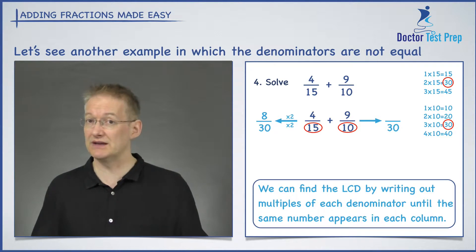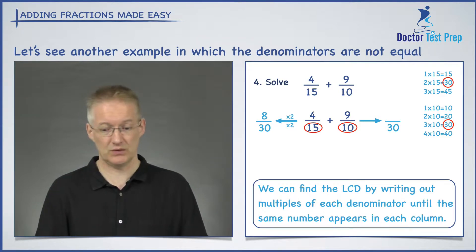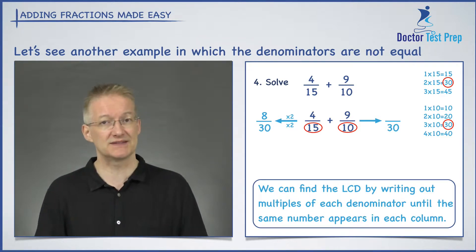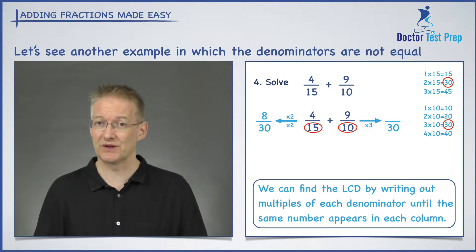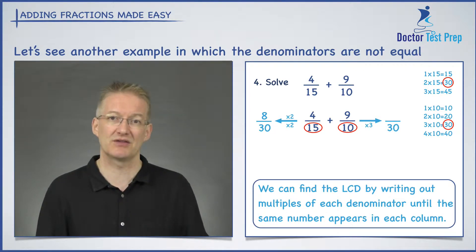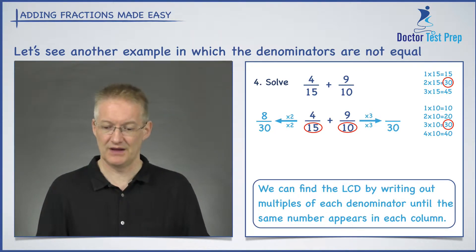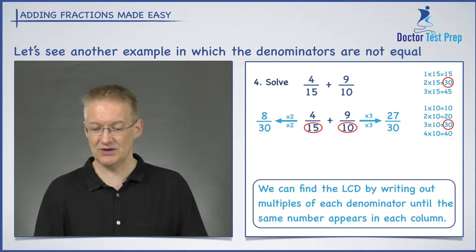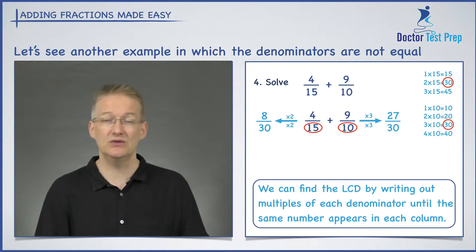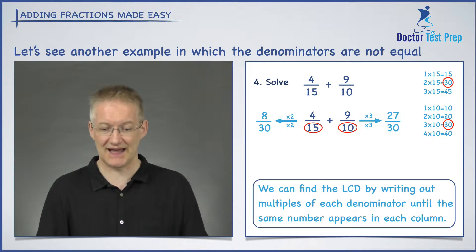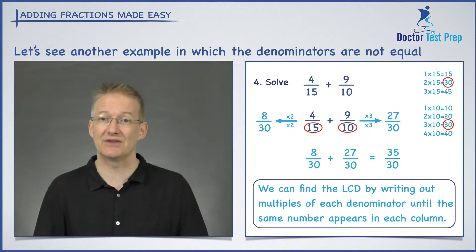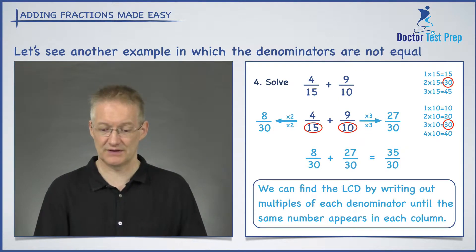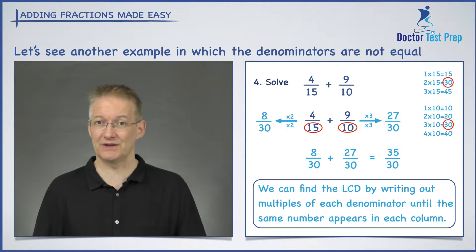Now looking at the 9 over 10: what did I multiply the 10 by to get to 30? I multiply by 3, which means I'm going to multiply the top by 3 as well. 9 times 3 gives me 27. So my new way of writing this is 8 over 30 plus 27 over 30, and then I can simply add those together to get 35 over 30.